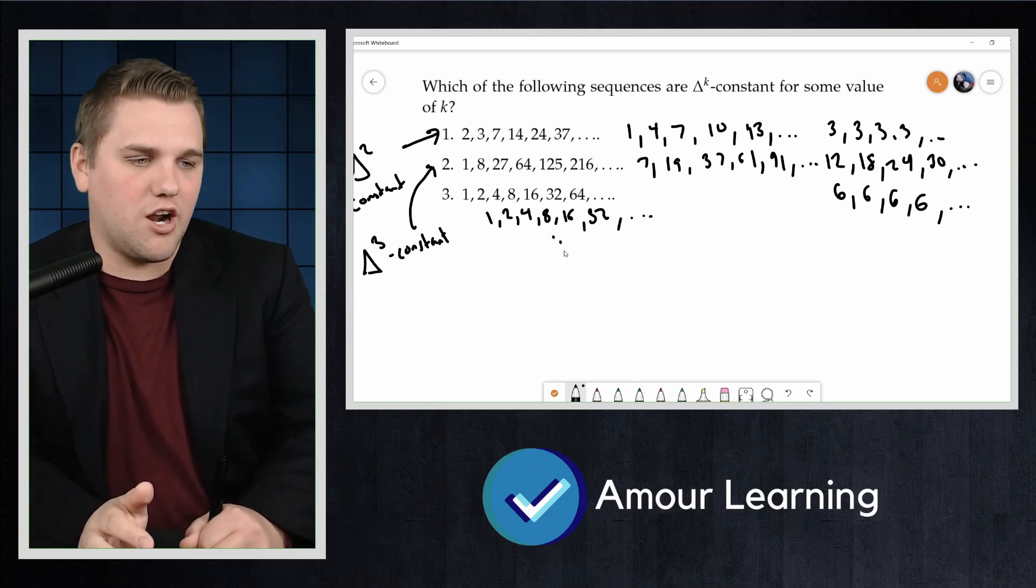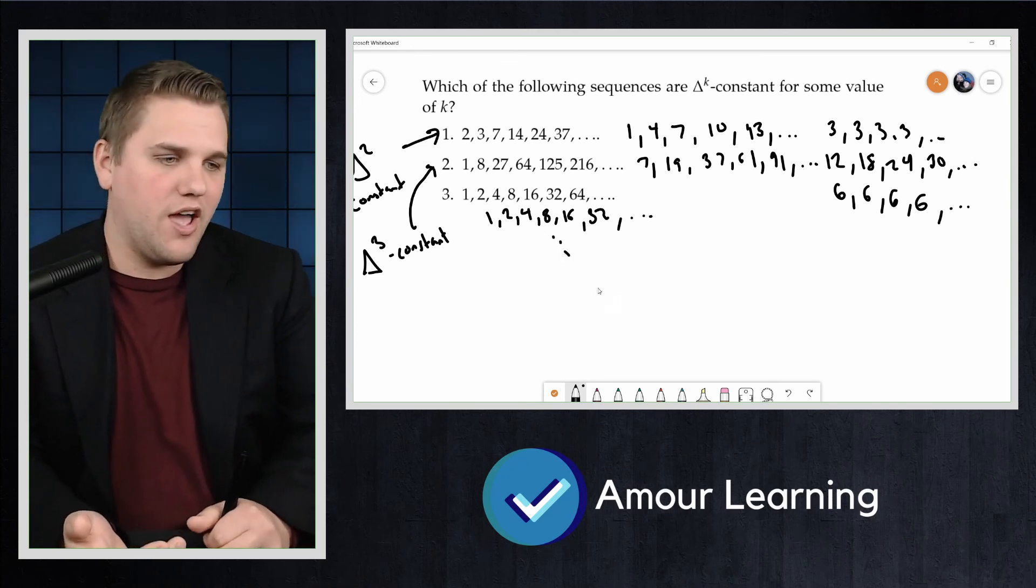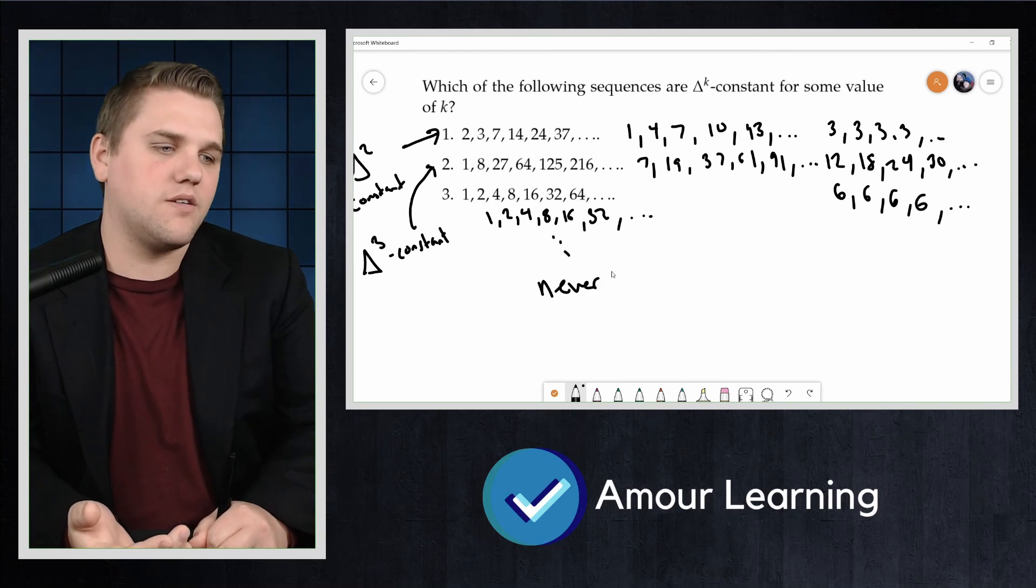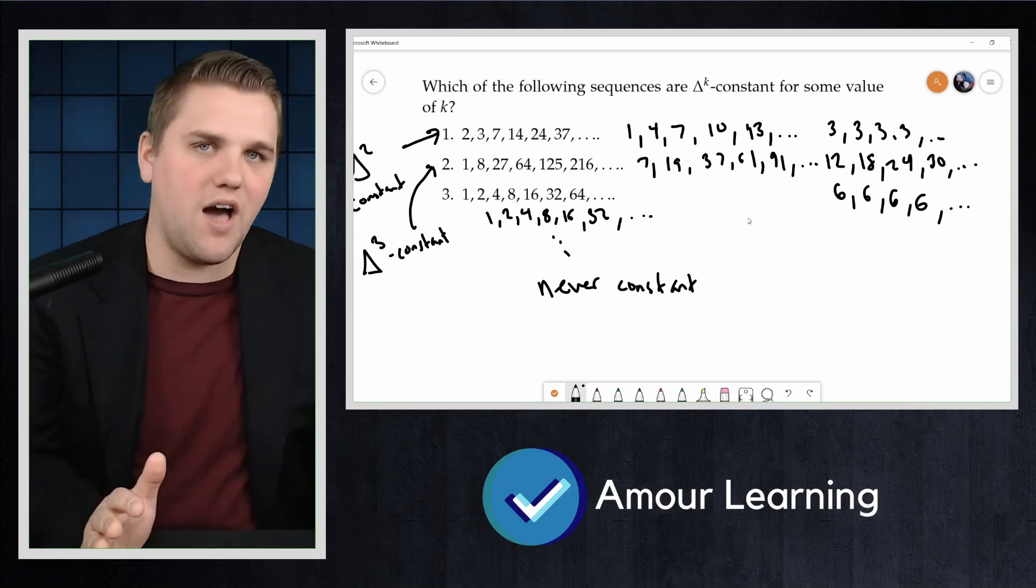So that's our kind of generic proof. This will just go on forever, and so never constant. And so it is not delta k constant for any value k.